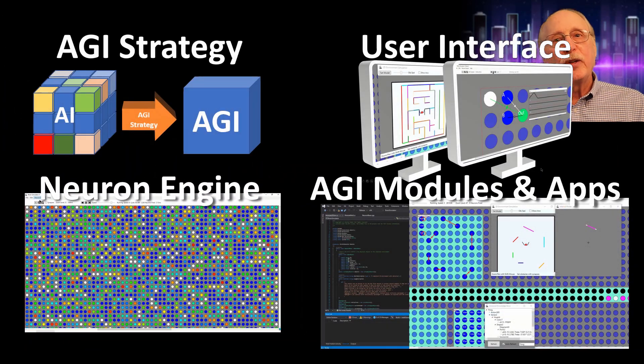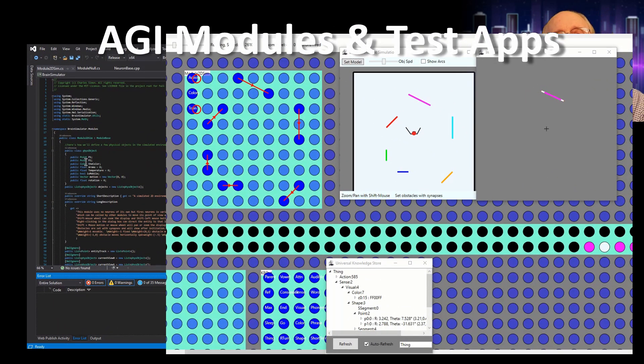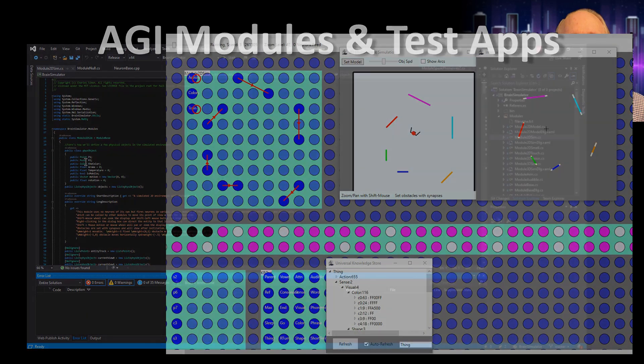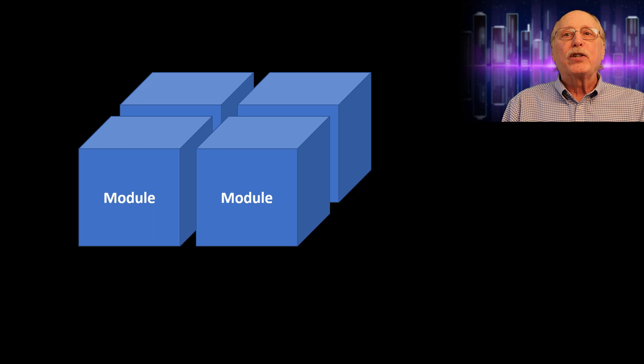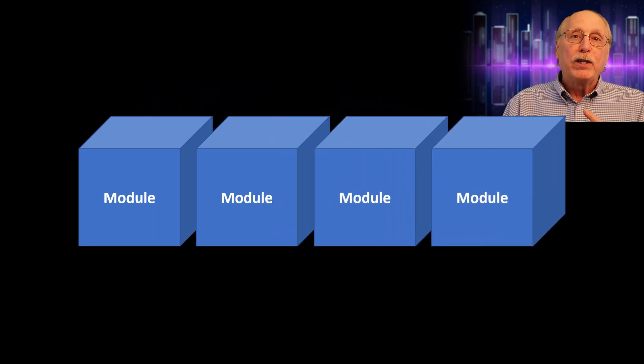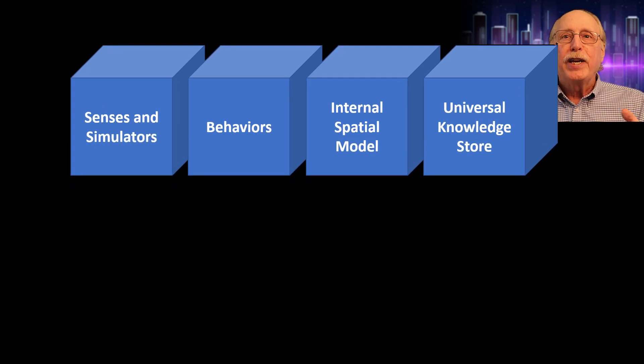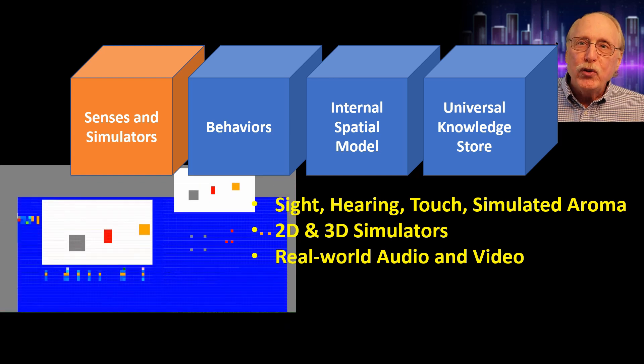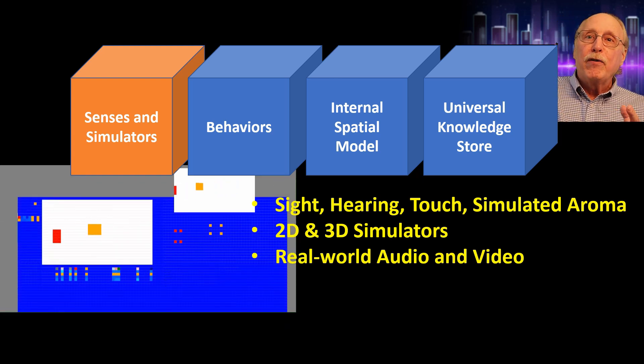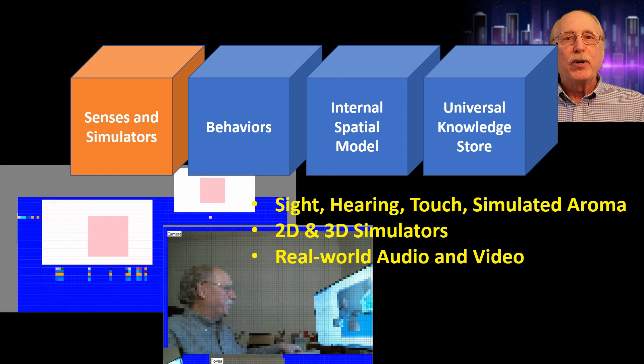Built on the neuron array, modules can speed experimentation by letting custom code perform any useful function on a cluster of neurons. The Brain Simulator project currently includes over 50 modules with functions for the senses of touch, vision, and hearing. For development, there are simulators in two and three dimensions, and for the real world there are modules for robotics and camera and microphone input.